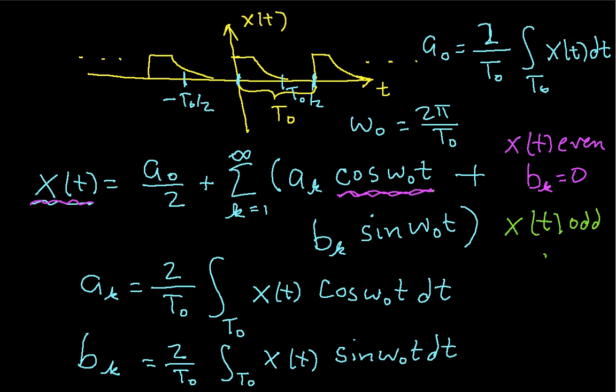If x of t is odd, then the a sub k's are 0. And again, this makes sense because if x of t is an odd function, then the sine is an odd function, and you would expect it to work out that you can compose an odd function as a sum of sines.